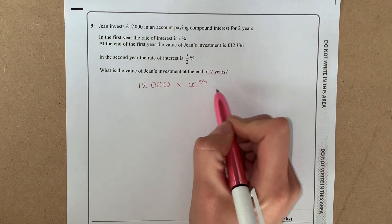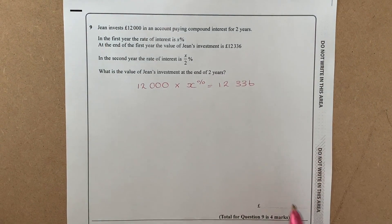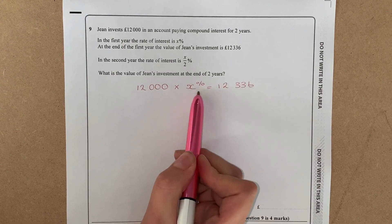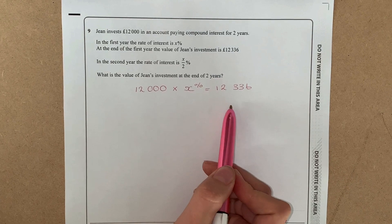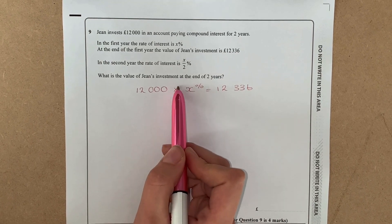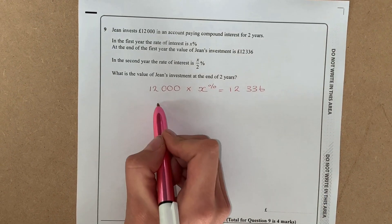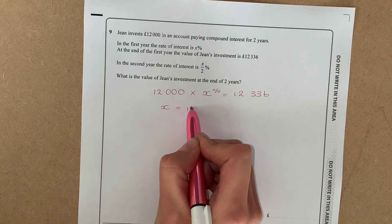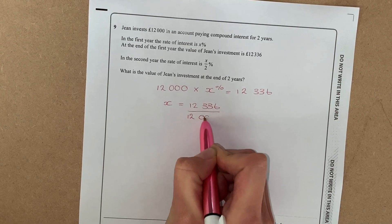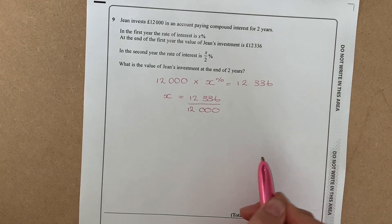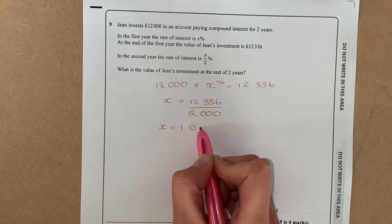But we know that at the end of that first year we had £12,336. So to find out what this value of x is, we're going to have to rearrange this to make x the subject. So if we're times in by 12,000 over this side, we're going to divide by 12,000. So x would equal 12,336 divided by 12,000. It was a calculator paper, so by the time you put that in the calculator you'd have worked out that x was worth 1.028.